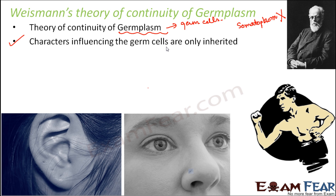To support this, Weismann performed an experiment in which he cut off the tails of rats for 22 generations. For 22 generations he continued to cut off the tails of rats and allowed them to breed. But every time, rats with tails were born — he never found a tailless rat. That is because the cutting of the tail was a trait acquired by the rat during its lifetime, and it had nothing to do with the germ cells; therefore, this trait was not inherited to the next generations.